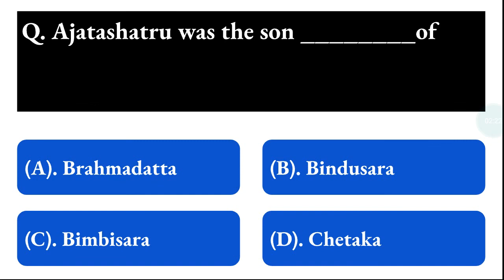Next question: Aurangzeb was the son of — option A: Brahmad Dada, option B: Bindusara, option C: Bimbisara, option D: Jedaka. The correct answer is option C, that is Bimbisara.